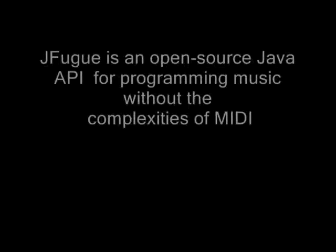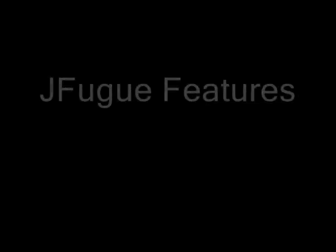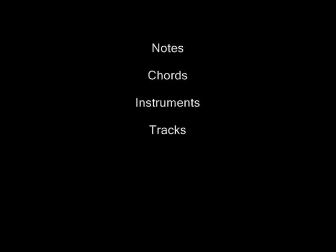JFugue is an open-source Java API for programming music. JFugue simplifies programming music and provides many more features. Music can be played at runtime. The music strings let you specify notes, chords, instruments, and tracks.